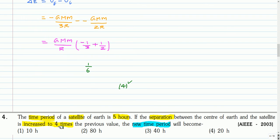This is the next question. The time period of a satellite of Earth is five hours. If the separation between the center of Earth and the satellite increases to four times the previous value, the new time period will become — four options are given. You can pause and attempt this question.